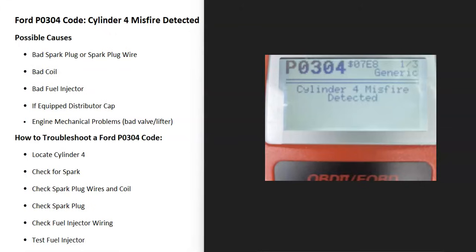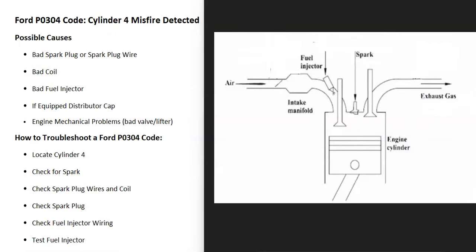What does this mean? Basically, each cylinder needs to have air and fuel going into it, and then at the right time there needs to be a spark to ignite this mixture. For some reason on cylinder number four, there's some kind of issue causing this to not work correctly. This is usually a problem either with the fuel going into the cylinder or with the spark to ignite the mixture.